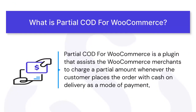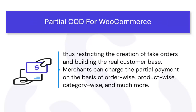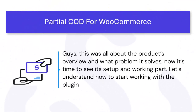Partial COD for WooCommerce is a plugin that assists WooCommerce merchants to charge a partial amount whenever the customer places an order with cash on delivery as the mode of payment, thus restricting the creation of fake orders and building a real customer base. Merchants can charge the partial amount on the basis of product-wise, order-wise, category-wise, shipping-wise, and much more. This was the product overview — now it's time to see its setup and working.